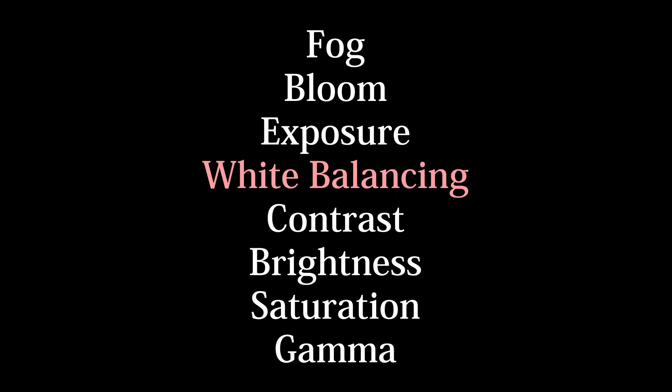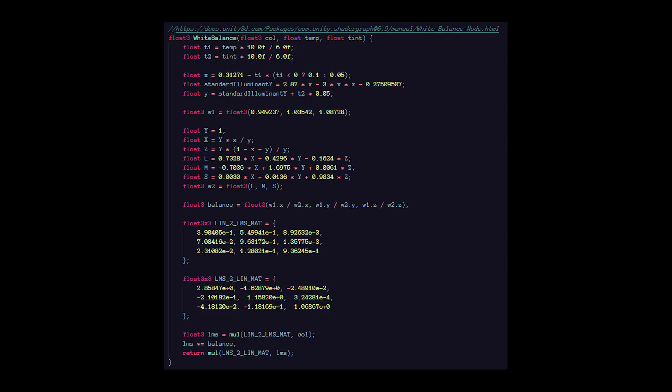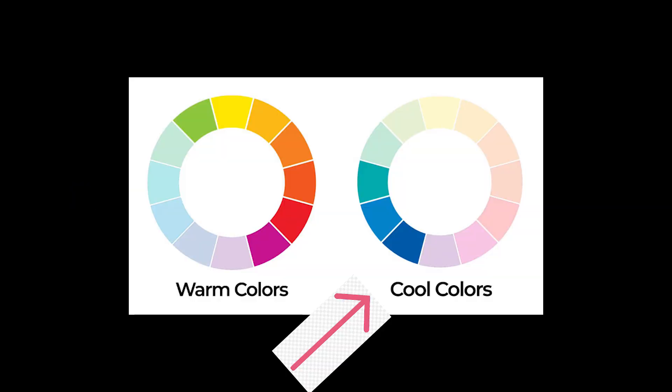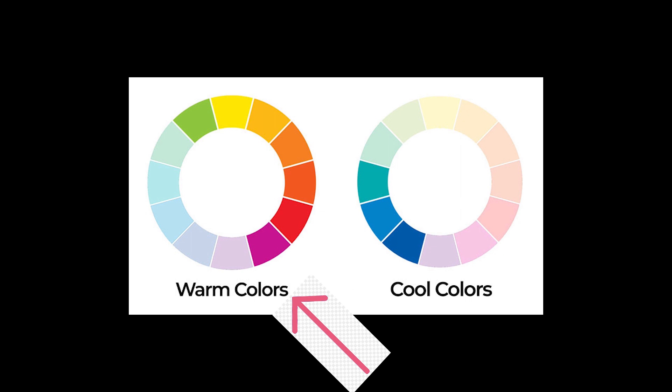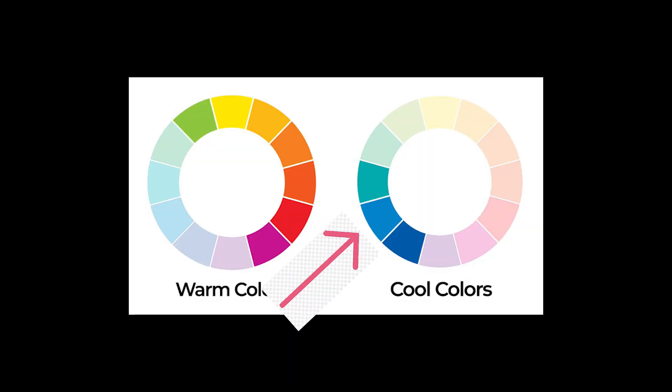Next up, we have white balancing. It's kind of complicated math-wise, but white balancing is defined by two parameters: temperature and tint. The temperature value will make the color cooler or warmer, and the tint value tweaks the color that gets temperature shifted.